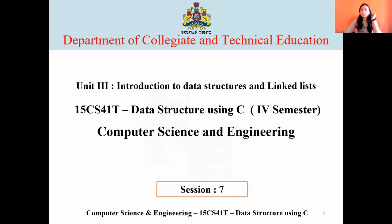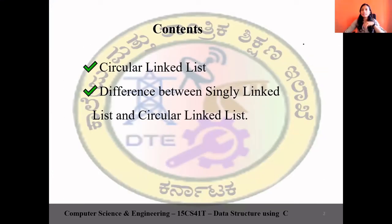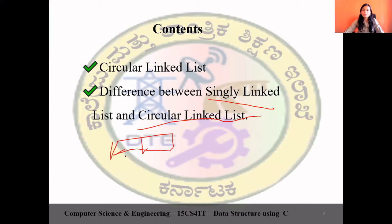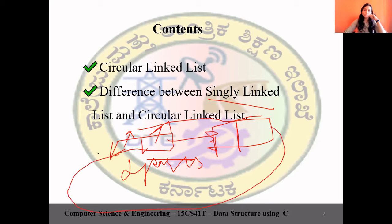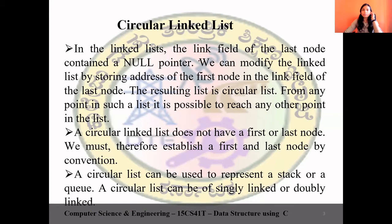So we are continuing the same chapter — chapter three, introduction to data structure and linked list, session 7. Last class we saw types of linked list, and in this class we will be seeing the difference between singly linked list and circular linked list. In singly linked list, each node has two parts: one is info or data, and the second is a pointer. Whereas in circular linked list, nodes are the same, but the last node points to the first node — that is the key difference.